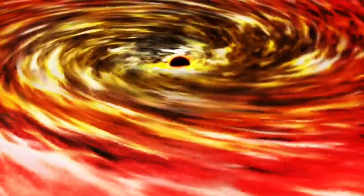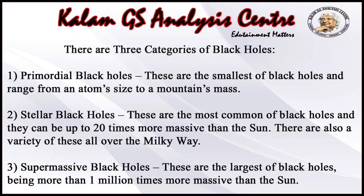तब वो बनता है एक Black Hole। अब हम जानते हैं Black Hole कितने प्रकार के होते हैं। Basically Black Hole तीन प्रकार के होते हैं: Primordial Black Holes — ये Black Holes में सबसे छोटे होते हैं और एक परमाणु के आकार से लेकर एक mountain के mass तक के होते हैं। Stellar Black Holes — ये Black Holes में सबसे common हैं और ये sun से 20 गुना अधिक विशाल हो सकते हैं। Milky Way galaxy में भी इनकी कई variety हैं।